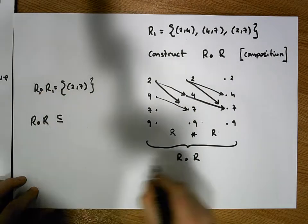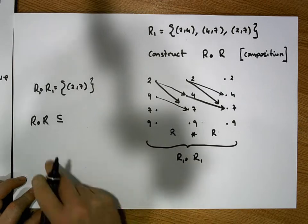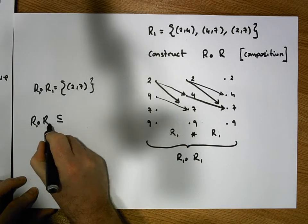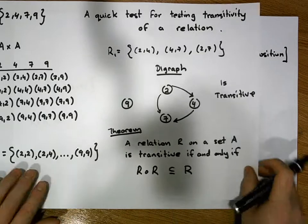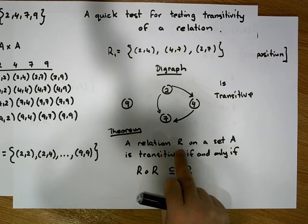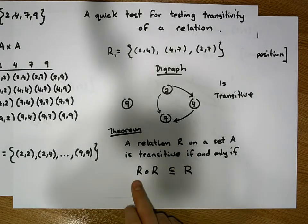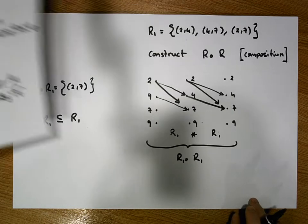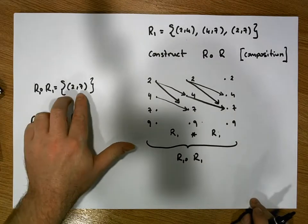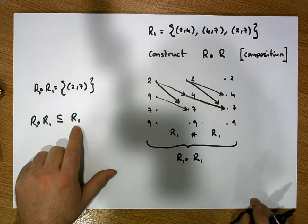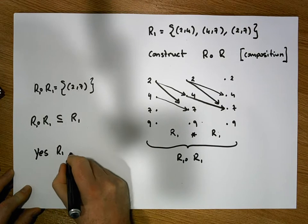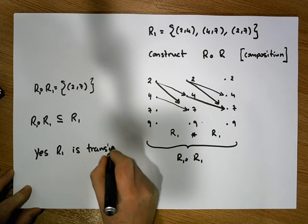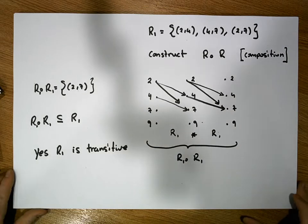R after R, which contains the ordered pair (2,7), is actually a subset of the original relation R1. Based on the theorem — a relation R on a set A is transitive if and only if its composition with itself is a subset of itself — we've shown the composition is a subset of R1, so R1 is transitive.